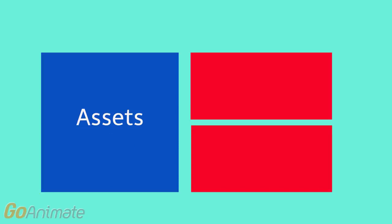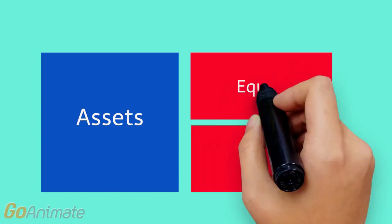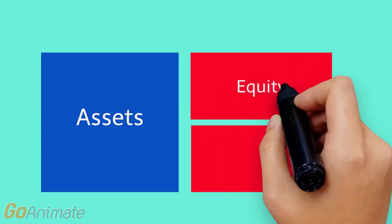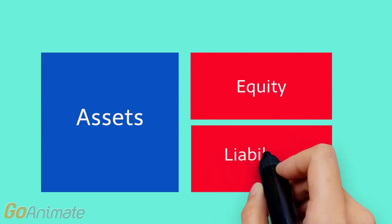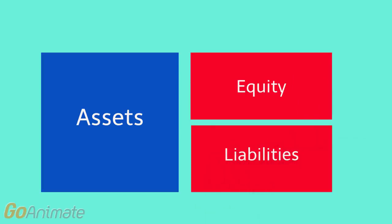The first red box represents equity. This is the amount the owner puts into the business. The second red box represents liabilities — these are amounts that other people provide to the business. We have to pay those people back, so we represent this with an unhappy face.